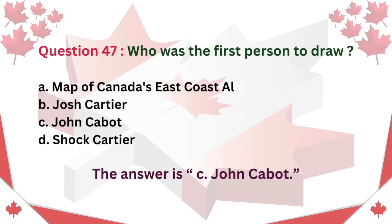Question 47. Who was the first person to draw a map of Canada's east coast? A. Owl B. Josh Cartier C. John Cabot D. Shaw Cartier. The answer is C. John Cabot.